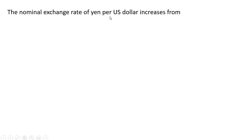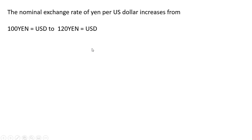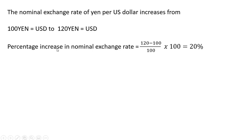The nominal exchange rate of the yen per US dollar increases from 100 yen equals 1 US dollar to 120 yen equals 1 US dollar. The percentage increase in the nominal exchange rate, using the percentage change formula, is 120 minus 100, all divided by 100, multiplied by 100, which equals 20%. So the dollar appreciated by 20%.